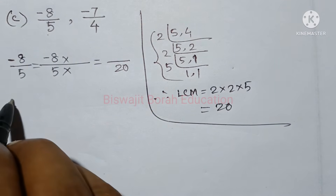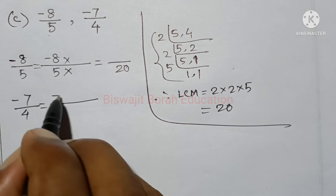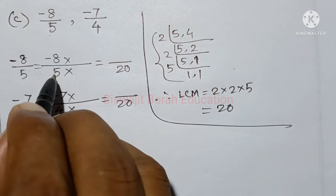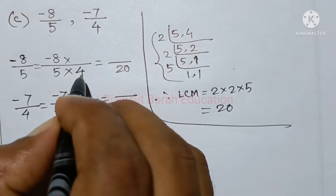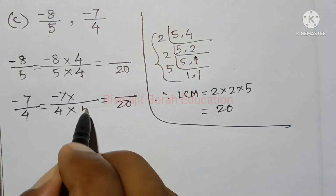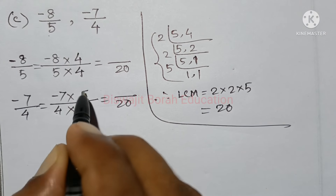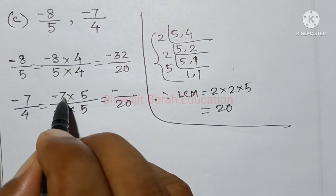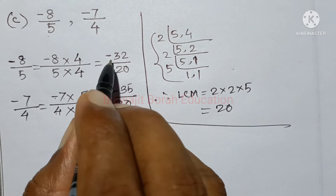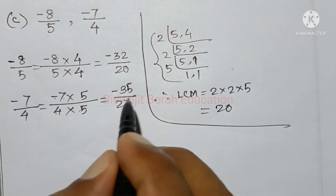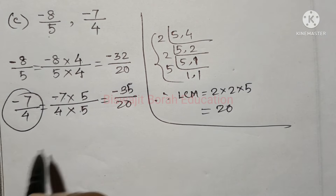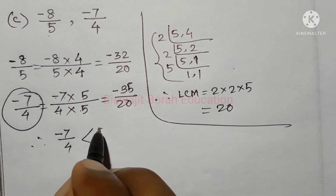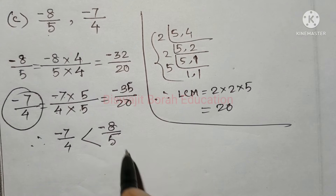So we have to write minus 7 × 4 equal minus 7 × 4 into how many 20. Where you have to get 25 times — this is also very good. So 8 is 21, so minus 8 is 32. In the same way, it is minus 32 minus 35. Therefore, minus 7 by 4 is less than minus 8 by 5.